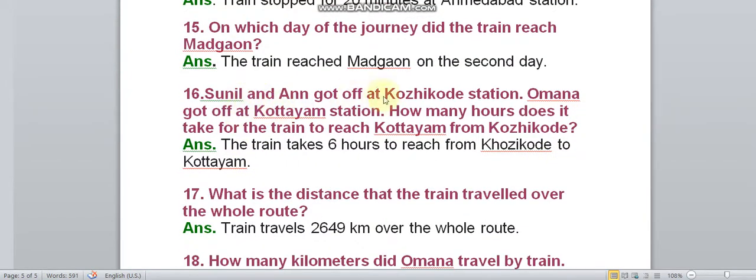Sunil and N got off at Kozhikode station. Omana got off at Kottayam station. How many hours does it take for the train to reach Kottayam from Kozhikode? The train takes 6 hours to reach from Kozhikode to Kottayam.